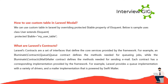What are Laravel's contracts? Laravel's contracts are a set of interfaces that define the core services provided by the framework. For example, the Illuminate\Contracts\Queue\Queue contract defines the methods needed for queuing jobs, while the Illuminate\Contracts\Mail\Mailer contract defines the methods needed for sending email. Each contract has a corresponding implementation provided by the framework — for example, Laravel provides a queue implementation with a variety of drivers and a mailer implementation powered by Swift Mailer.